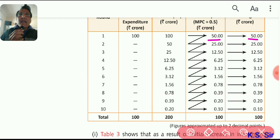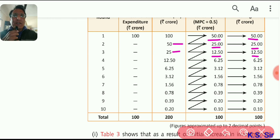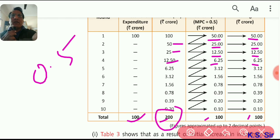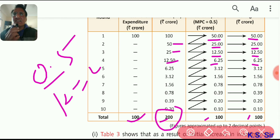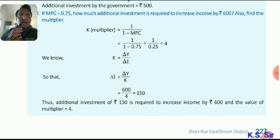At the end of all rounds, 100 crore of investment generates 200 crore of income — 100 crore saving and 100 crore consumption. This confirms that when MPC equals 0.5, the multiplier equals 2, so 100 crore additional investment generates double the income. You can review the screen to see the mechanism table. Try the same calculation with MPC 0.8 or 0.6 to practice — with MPC 0.8, first round gives 80 consumption and 20 saving instead of 50 and 50.